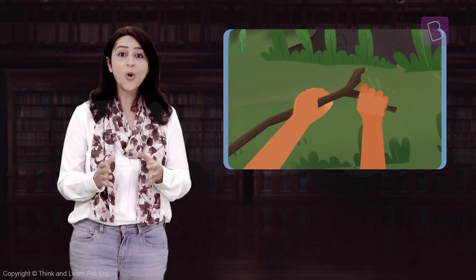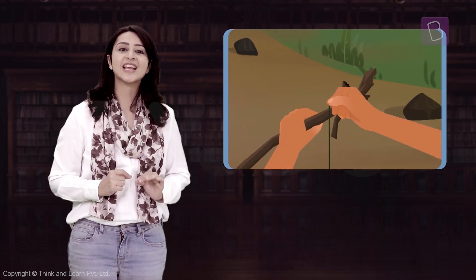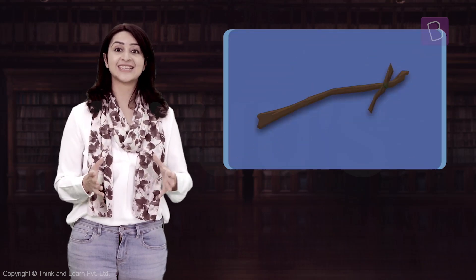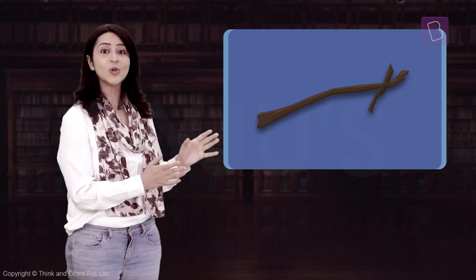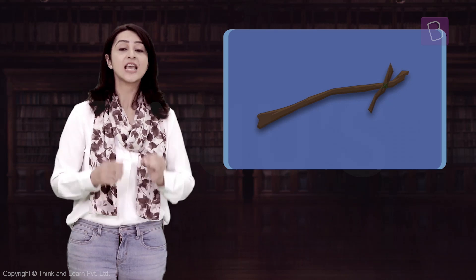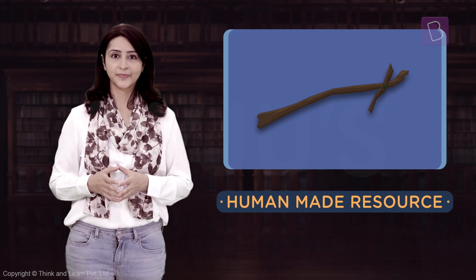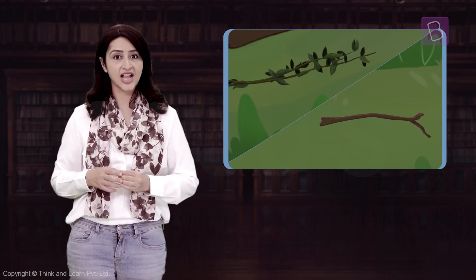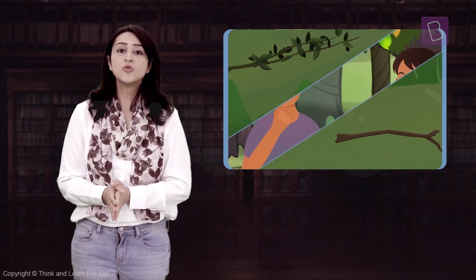They couldn't pluck the mangoes with just the stick and the creeper, so they made a pole with a hook, which they used as a tool. This creation of theirs is itself a new resource. Any resource made by humans using natural resources is called a human-made resource.